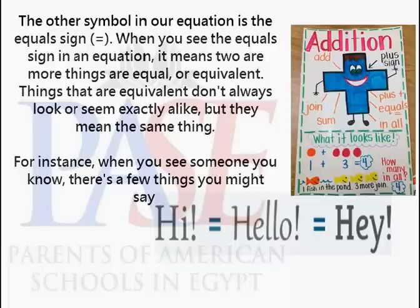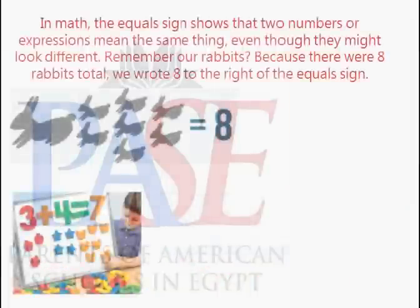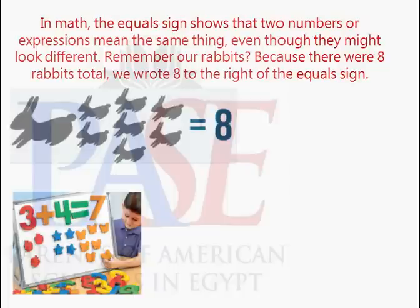For instance, when you see someone you know, there are a few things you might say. These words aren't exactly alike, but they mean the same thing — they're all ways to greet someone. In math, the equals sign shows that two numbers or expressions mean the same thing, even though they might look different.